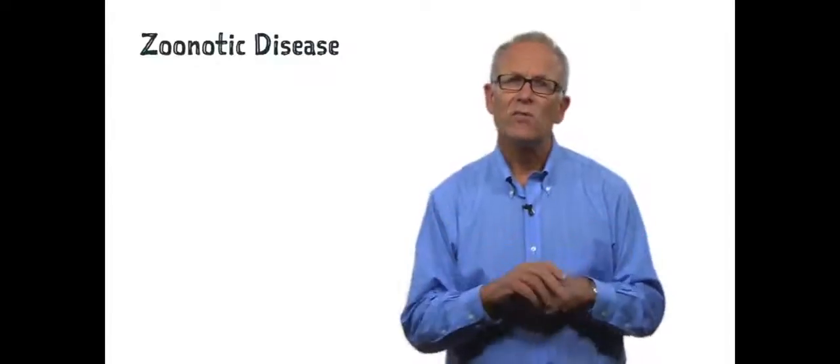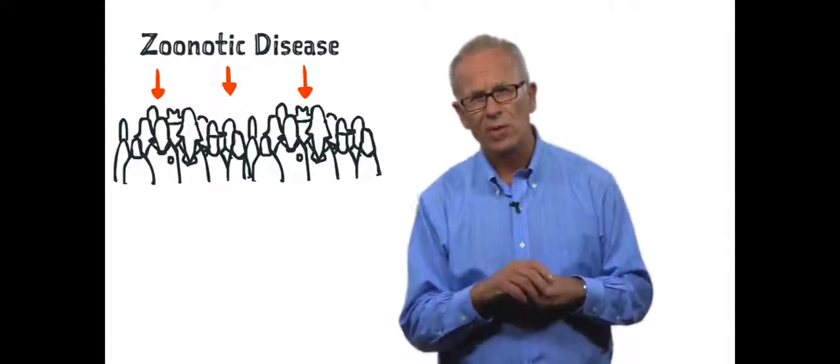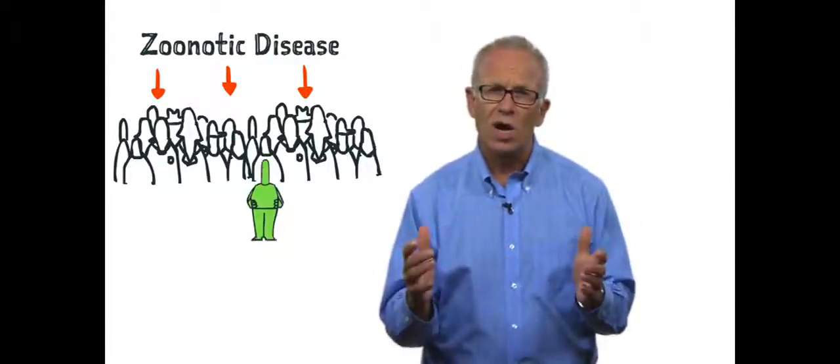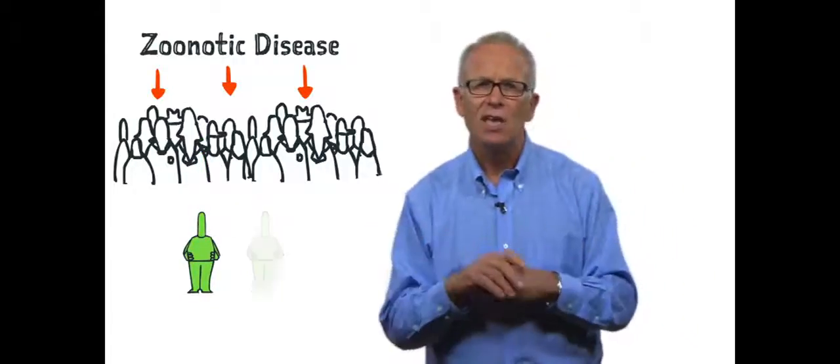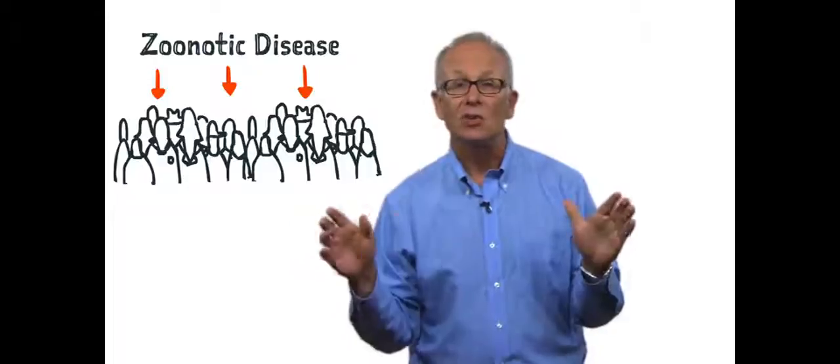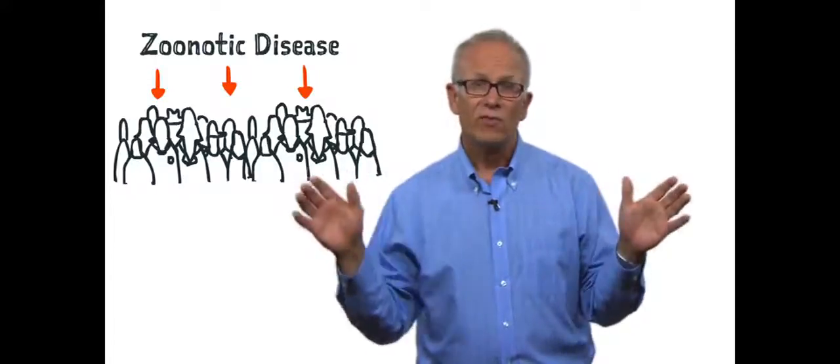In most instances, a zoonotic disease just spills over from the reservoir into the human population. It may infect one or two people, but then with no onward transmission, just fades out and is left as an undiagnosed or misdiagnosed infection.